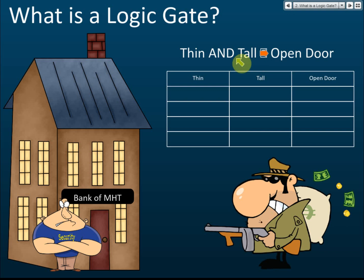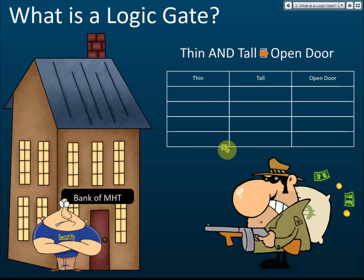A logic process is a process to make a judgment and a decision. These are the instructions given to the security guard. The security guard needs to analyze, make judgments, and make decisions. This table shows how the security guard makes those decisions.